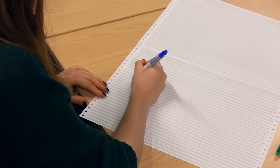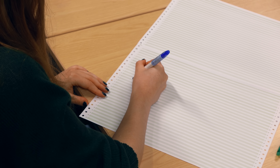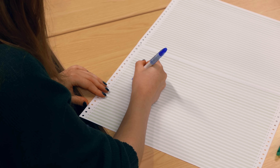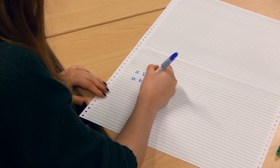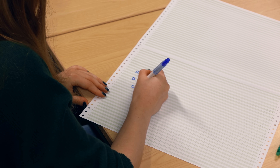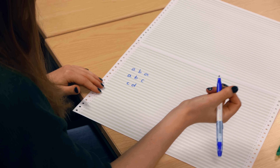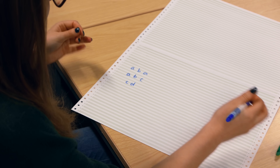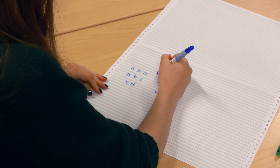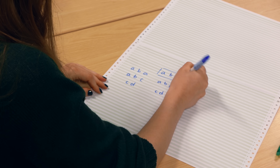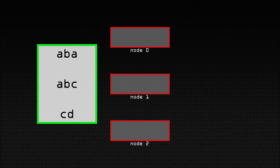For simplicity, we've got a file where the first line is ABA, then ABC, then CD. This would be distributed across nodes — ABA is on the first node, ABC is on the second node, and CD on the last node.